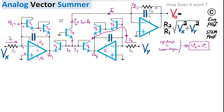By Kirchhoff's Current Law (KCL), no current can flow into the input of an ideal op-amp due to its effectively infinite input impedance. Therefore I1 has only one path: through the base-emitter junctions of transistors T1 and T2 to the op-amp output.